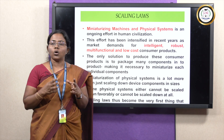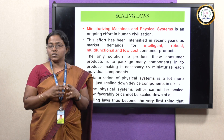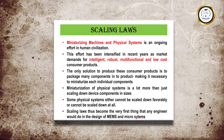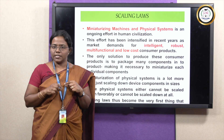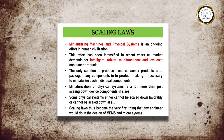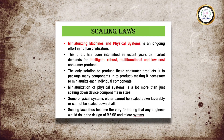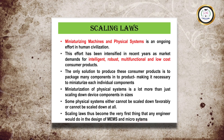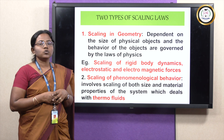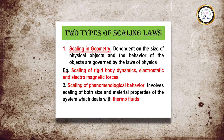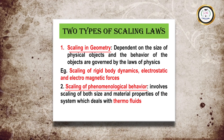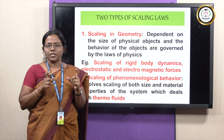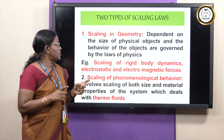Then, scaling laws. If you want to reduce the size of any component, we have to follow the scaling laws. Here we are miniaturizing the size of the machine as well as the physical system. Nowadays it is an ongoing effort for human civilization — there is a demand for intelligent, robust, multifunctional, and low-cost consumer products. There are two types of scaling: scaling in geometry and scaling of phenomenological behavior. Scaling in geometry is nothing but reducing the length, breadth, and height of a particular component, which can be done with the laws of physics.